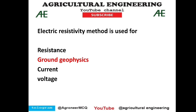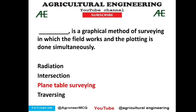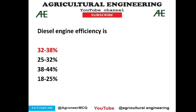The electric resistivity method is used for ground geophysics — option correct. Plane table survey is a geographical method of surveying in which field work and plotting are done simultaneously, where we actually draw the map of the field with the plane table. Late diesel engine efficiency is a basic question: the efficiency of a diesel engine is 30 to 38 percent.